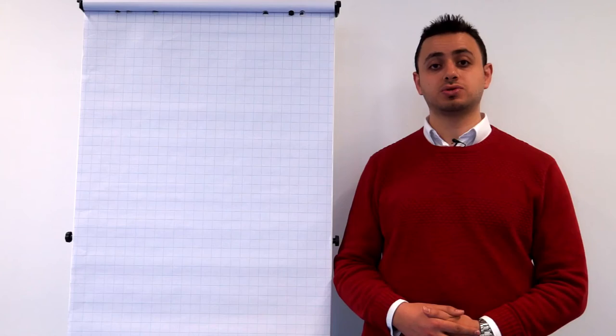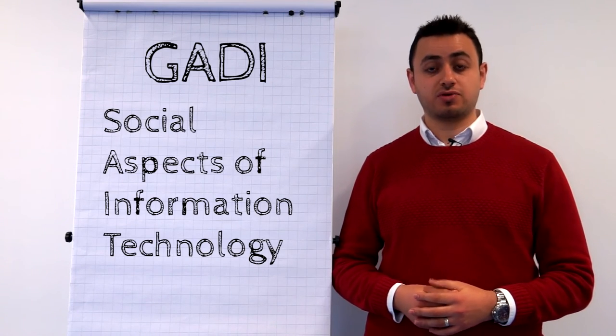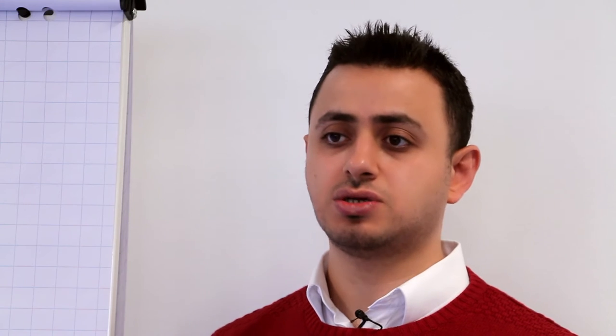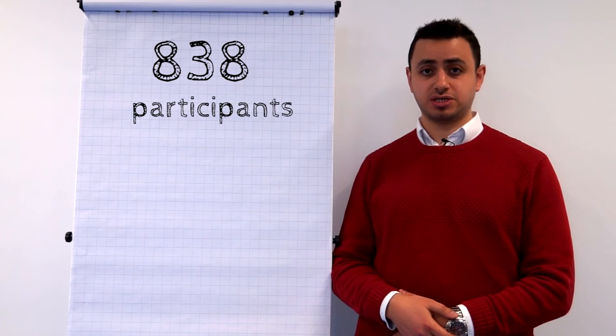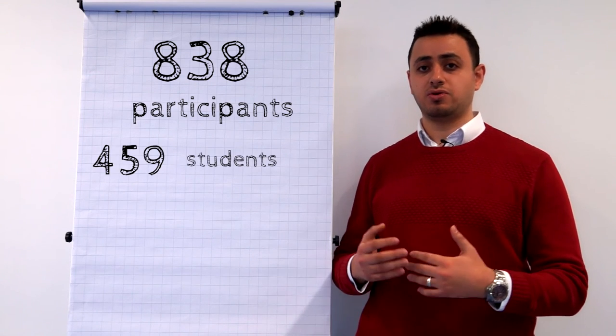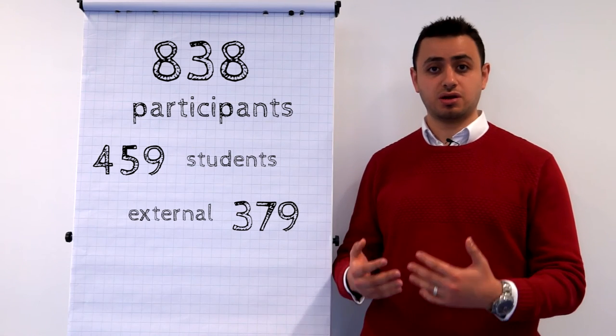Our analysis is based on a summer course provided by the Graz University of Technology called Social Aspects of Information Technology. This course is obligatory for the university students, but it is still open for the public. Generally, this course is talking about information technology and its implications on society. In addition, there were 838 participants total: 459 are university students, 379 are external learners.